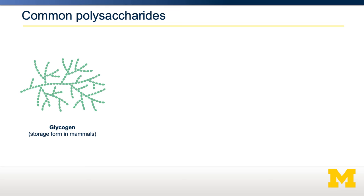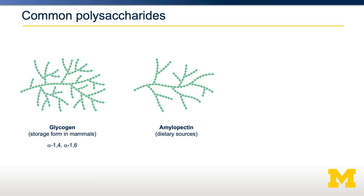Glycogen is the major storage form of carbohydrates in mammals. It comprises mostly alpha-1,4 glucose linkages forming linear chains, but every once in a while also has an alpha-1,6 bond, creating a branch point. Glycogen has multiple branch points and is highly branched, which allows it to be stored in a compact, water-soluble form. Amylopectin is quite similar to glycogen—it also has alpha-1,4 linkages and occasional alpha-1,6 branch points—but differs in that the amount of branching is substantially less.